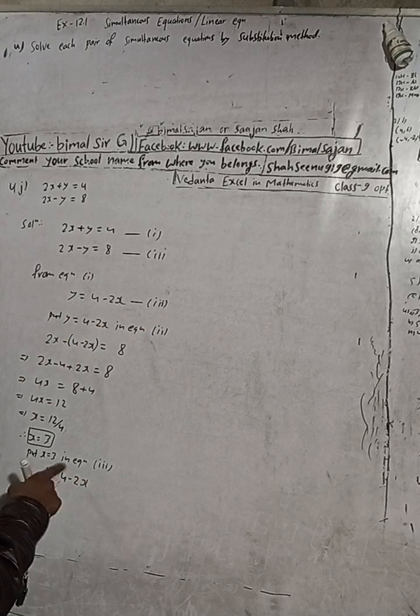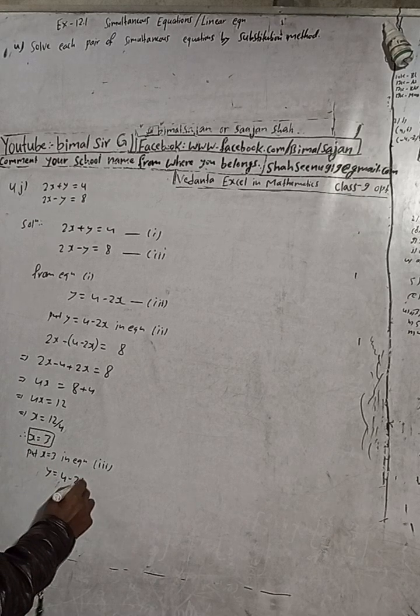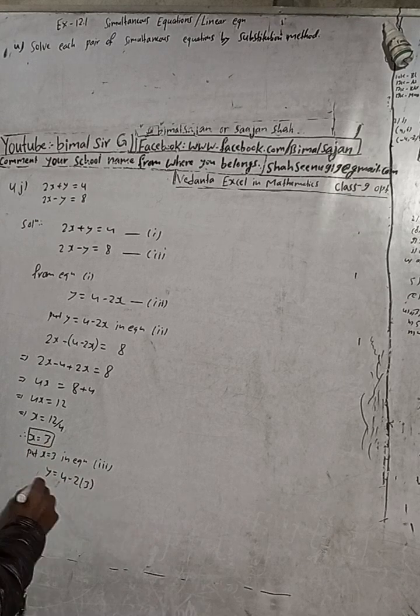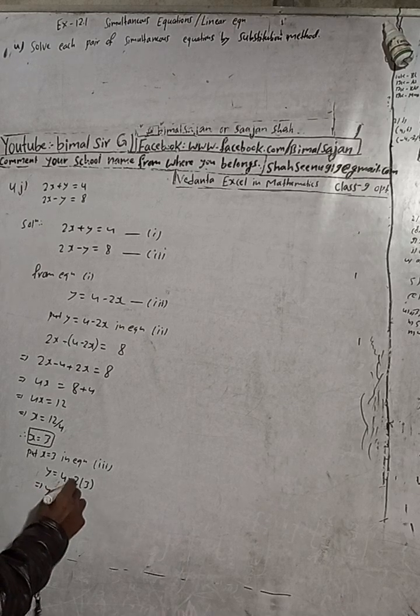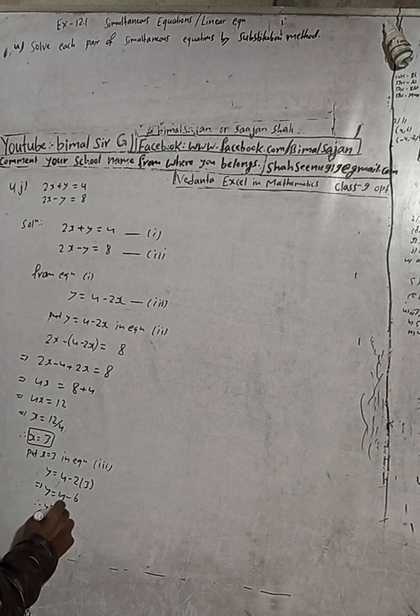In place of x, put 3. So y = 4 - 2(3) = 4 - 6. Therefore, y = -2.